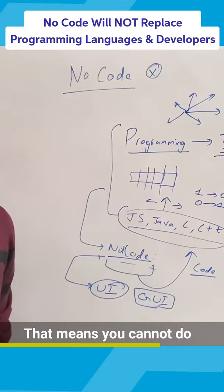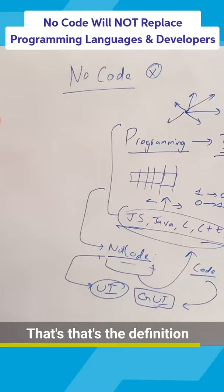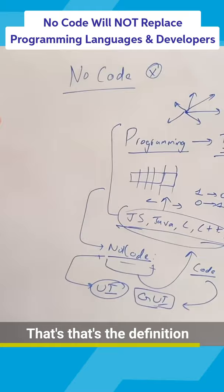That means you cannot do everything you would be able to do with the programming language with that particular UI, because if you were able to, then that is just another programming language. That's the definition of a Turing complete programming language, which is one of these and many other languages.